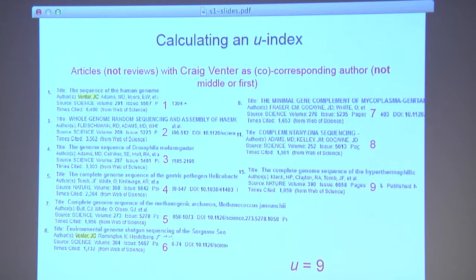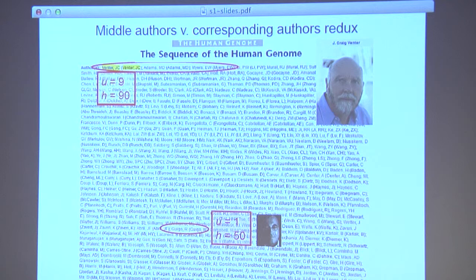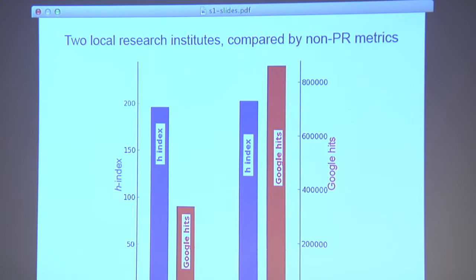So how do you calculate a U index? Going back to Craig Venter, you order papers by citations, make sure he is a co-corresponding author and nothing is a review. You count one, two, three, four, five, six until you reach the cutoff — and he has a U index of nine. We go back to the paper and now we see that whereas before their H indexes were within range of each other for a middle author versus the first author, their U indexes are tenfold different. We think this really measures the contribution to the paper.